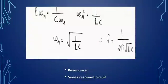At resonance, the resonant frequency F = 1/(2π√LC). This is derived as follows: at resonance ωL = 1/ωC, so ω²LC = 1, giving ω_R = √(1/LC). Since ω = 2πF, we get F = 1/(2π√LC). This is the resonant frequency.